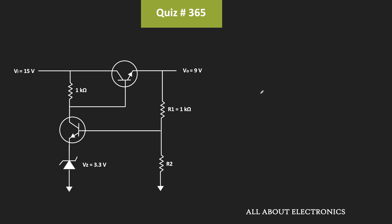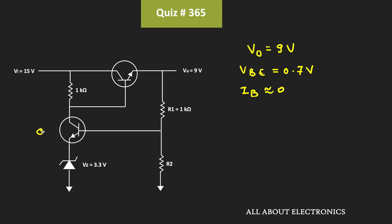First of all, let us write down what has been given to us. Vout is equal to 9V. The Vbe of both transistors is equal to 0.7V, while the base current of both transistors is negligible. Let's say this transistor is Q1 and this transistor is Q2. The base-emitter voltage of both transistors is 0.7V, meaning these two voltages are 0.7V.